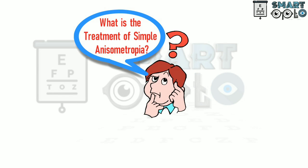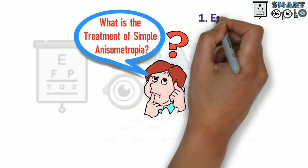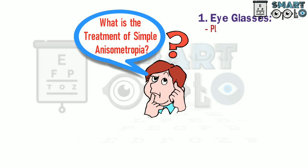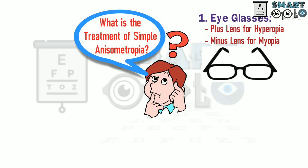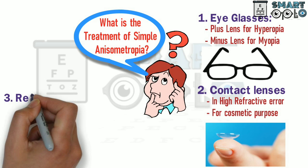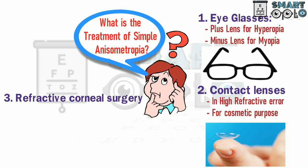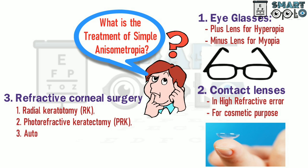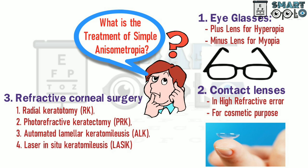What is the treatment for simple anisometropia? The first option is eyeglasses — we prescribe a plus lens for hyperopia and a minus lens for myopia. The second is contact lenses, which are prescribed in cases of high refractive error and for cosmetic purposes. The third is refractive corneal surgery, under which we perform radial keratotomy, photorefractive keratectomy, automated lamellar keratomileusis, and laser in-situ keratomileusis (LASIK).